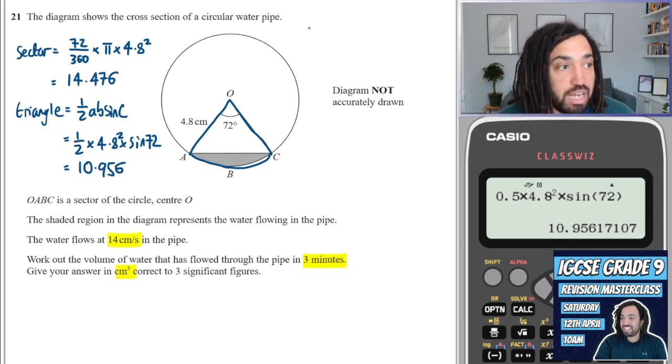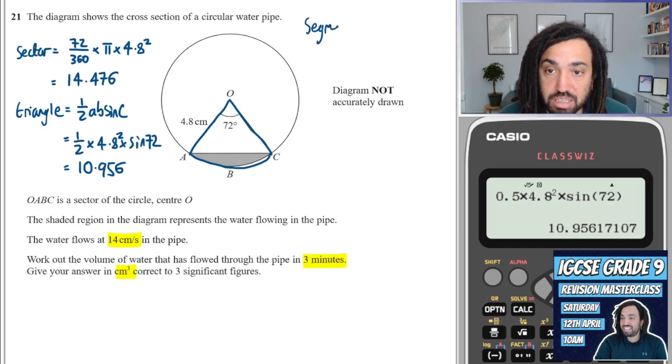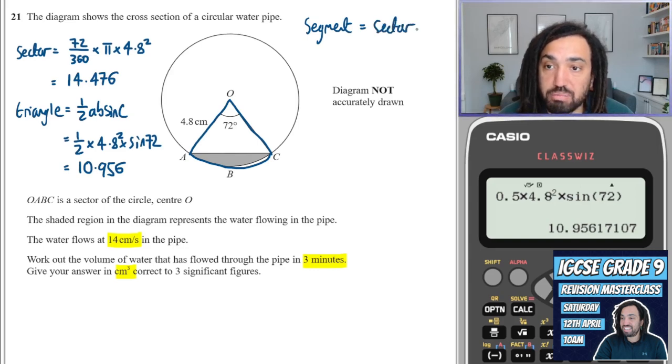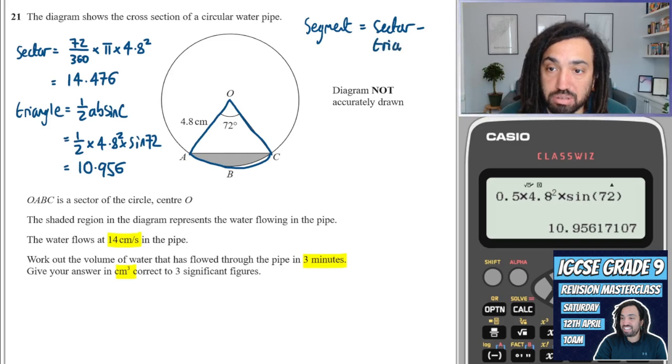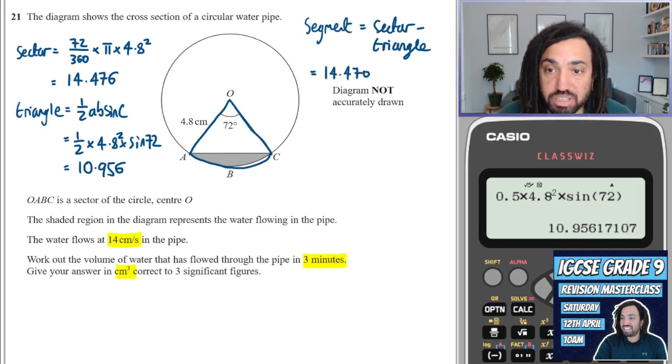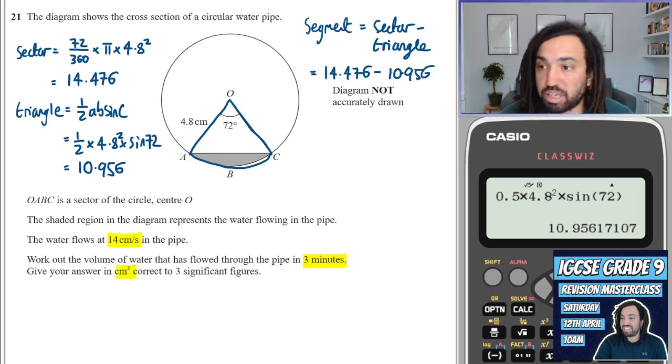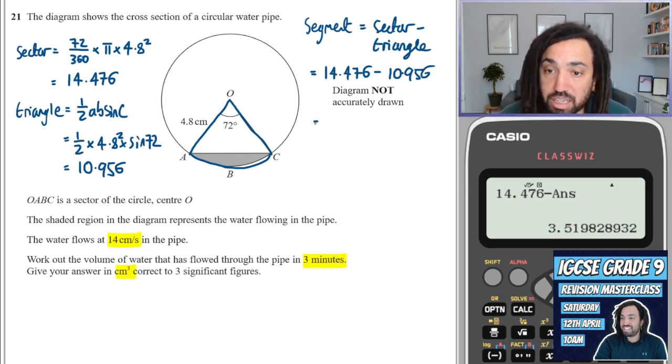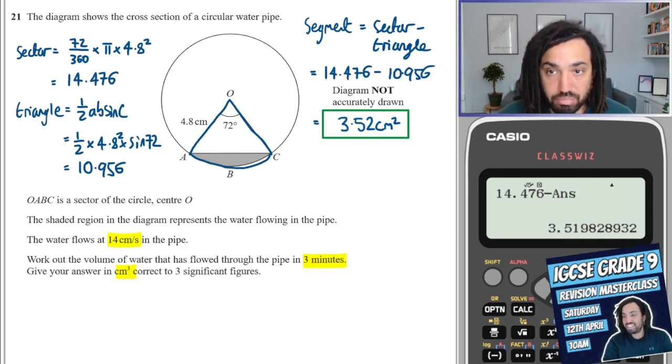Okay, great. So now I can work out the segment. I'll do that up here. So the segment or the shaded area is going to be the sector minus the triangle. So this will be 14.476 minus 10.956. So I could go over here on my calculator and I could do 14.476 and I could subtract and I might use the answer actually because the last answer was in the calculator. And I get an area of 3.52.